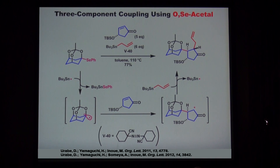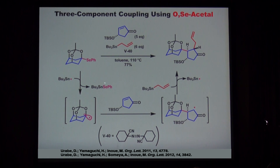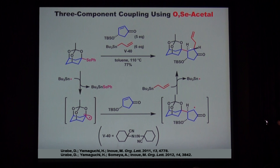This concept can be expanded to a different substrate. Now, with a free oxygen and an alkyl selenide, under similar reaction conditions, the three components couple together giving rise to this compound. What happens is: first, homolytic cleavage of this bond. This radical adds from the opposite face of the TBS-oxy group. Then this radical reacts with the olefin from the opposite face of the trioxaadamantane structure, leading to this compound with introduction of two new stereocenters.